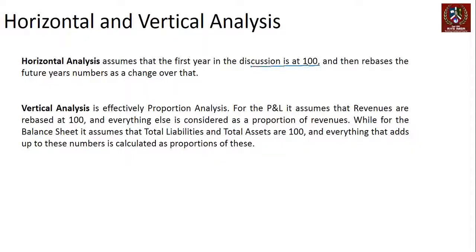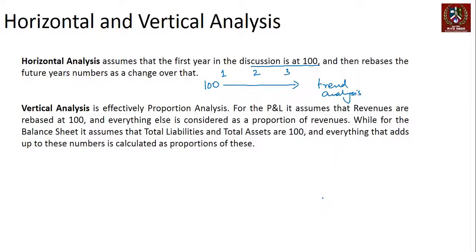Looking at numbers in more detail, horizontal analysis assumes that the first year is at one hundred, whatever the numbers are, and then future year numbers change over that. You are rebasing the numbers for change over future years — year one, year two, year three — and you are trying to find out what the change is over the years in those numbers. In a sense, this is trend analysis.